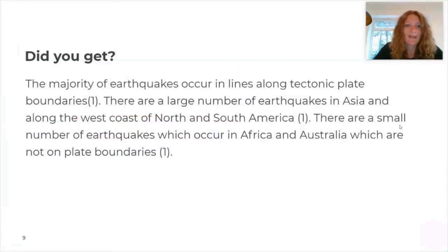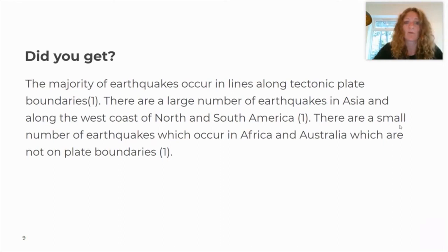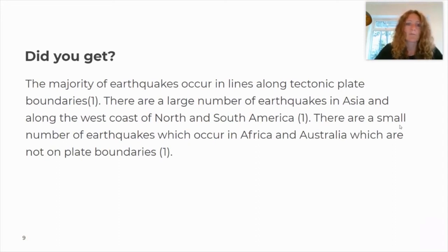Here are the answers. First mark — the rule: the majority of earthquakes occur in lines along tectonic plate boundaries. Second mark — a specific example: there are a large number of earthquakes in Asia and along the west coast of North and South America; you could have chosen anywhere with a visible cluster. Third mark — the anomaly: there are a small number of earthquakes which occur in Africa and Australia, which are not on plate boundaries.